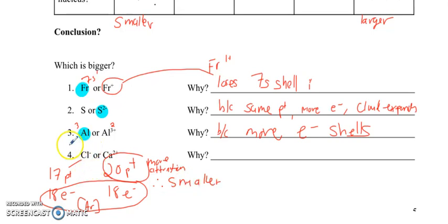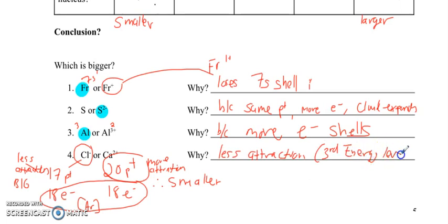So chlorine has less attraction. So it will be bigger. So which one is bigger? Chlorine. Why? Because there is less attraction. And they both at this point are in the third energy level once we've gained and lost those electrons. Good. Okay. Let's flip the page.